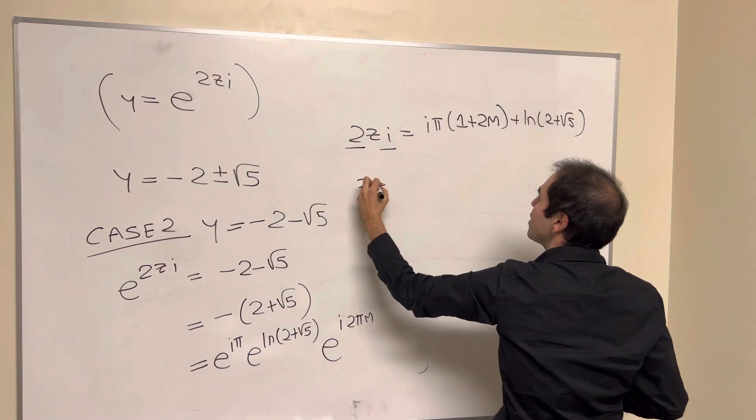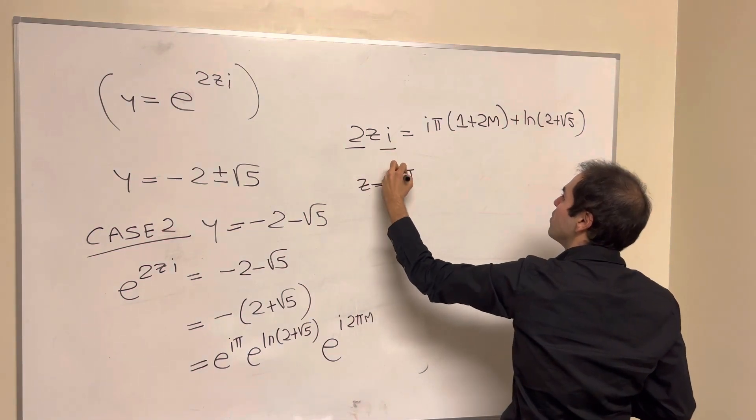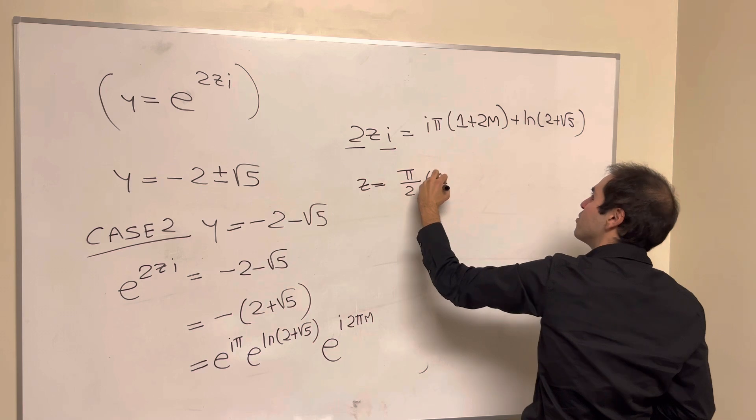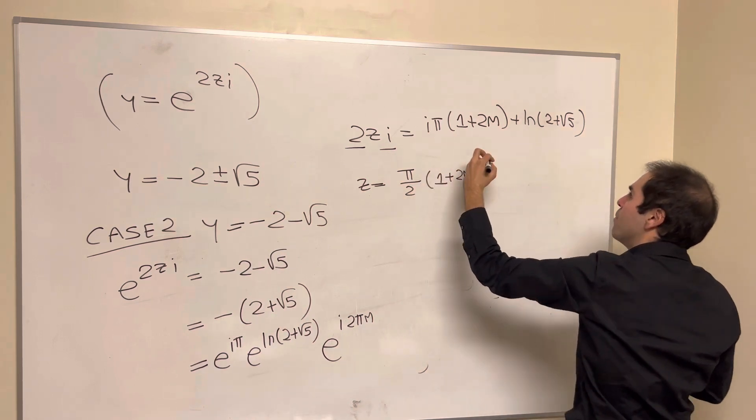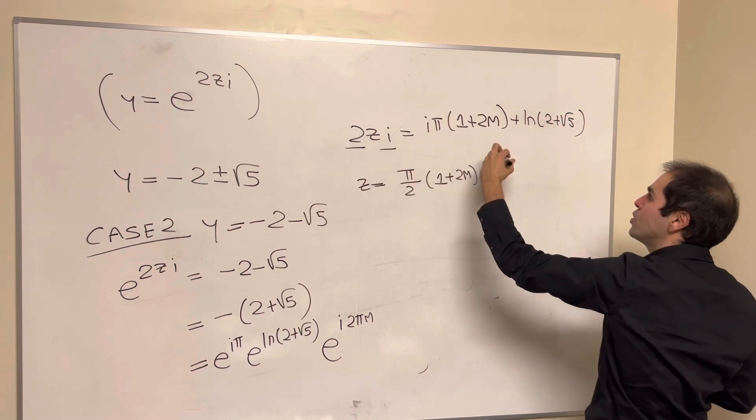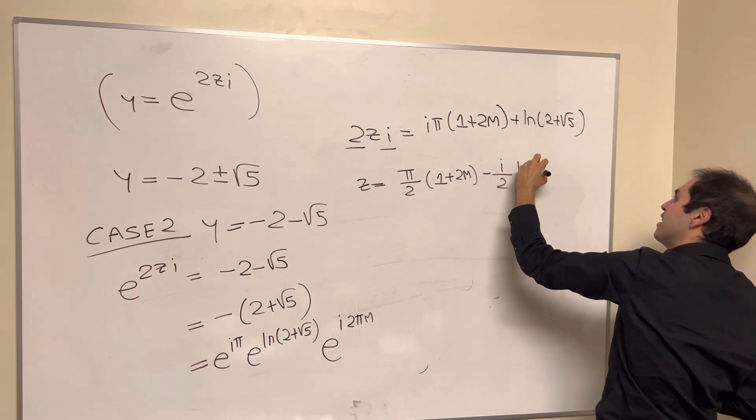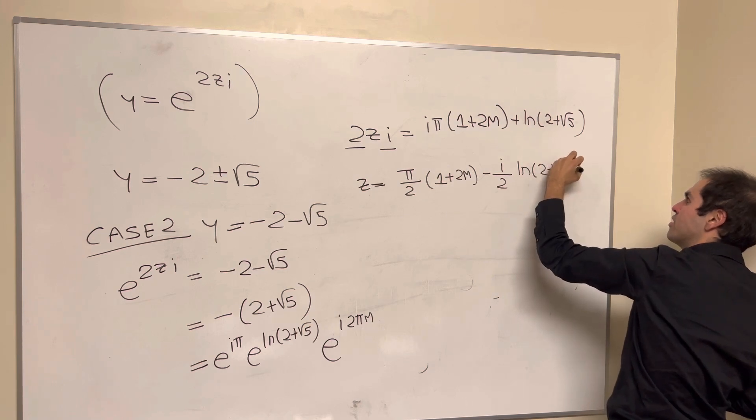So I think you get z is pi over 2, multiples of pi over 2, 1 plus 2m, and then minus, so 1 over 2i, so minus i over 2, ln of 2 plus square root of 5.